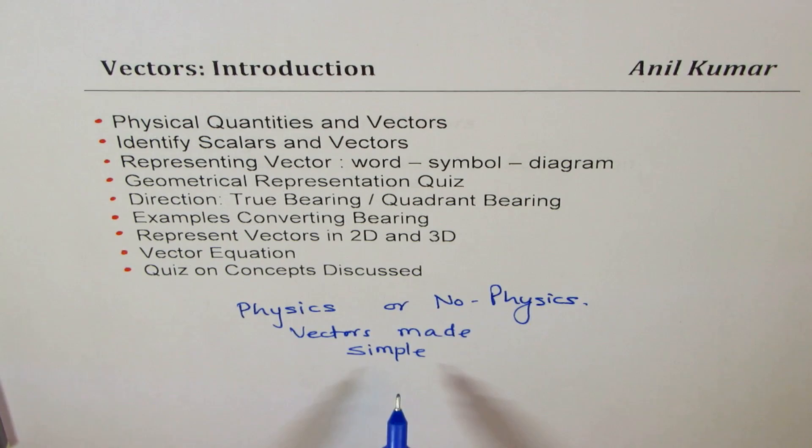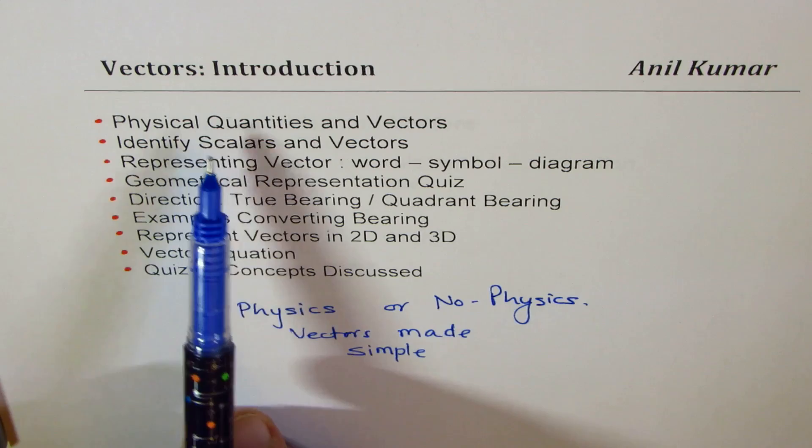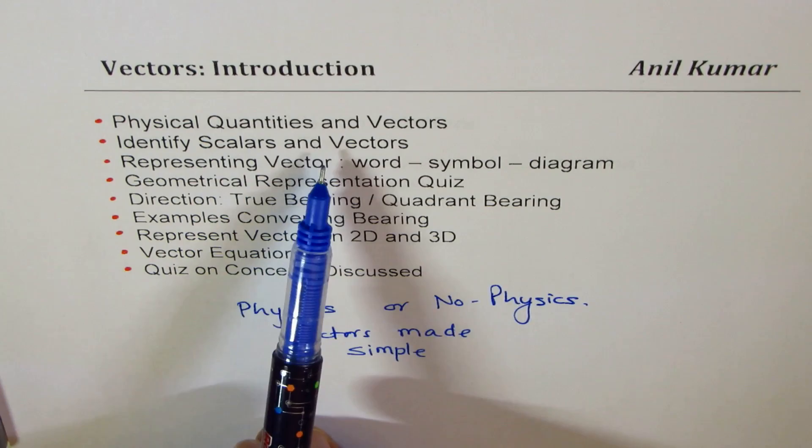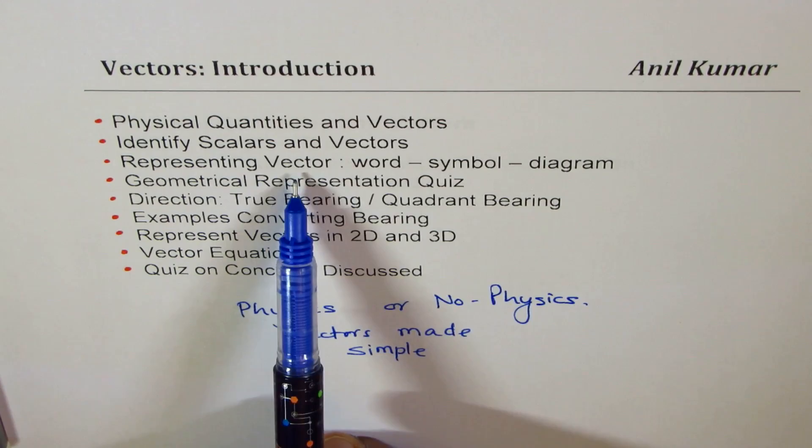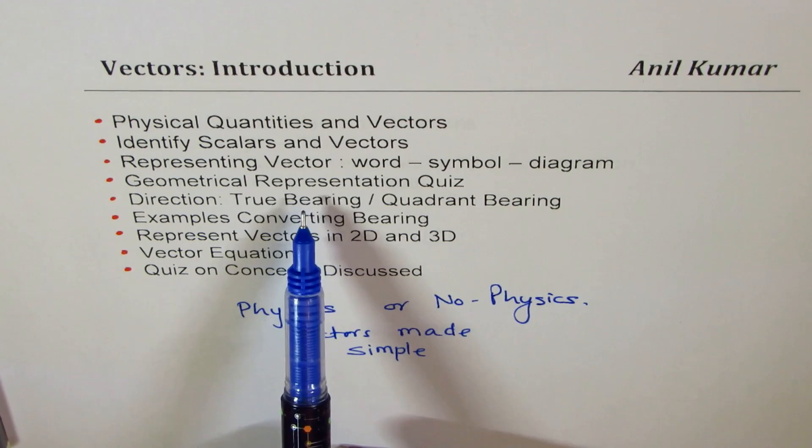After understanding a few terms which are physical quantities, we'll move on to understand the difference between scalars and vectors. How to represent vectors? Three ways — words, symbols and diagrams. Then we'll have a small quiz based on our learning on representing vectors.